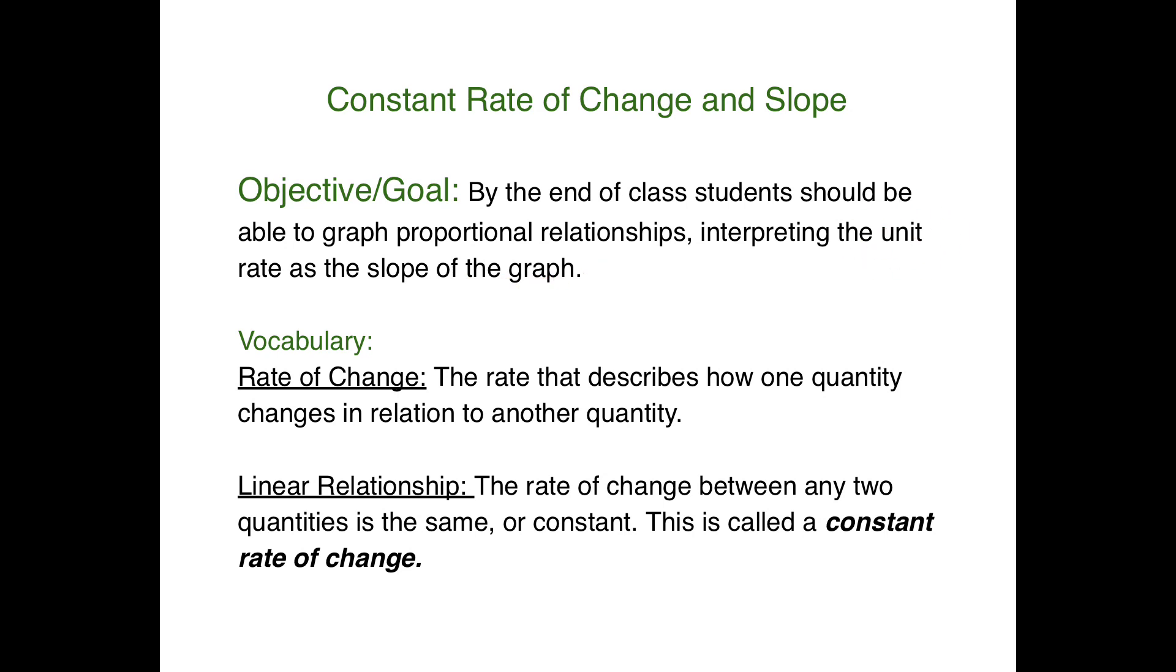Unit rate means that it's to one unit. Rate of change is when you have the rate that describes how one quantity changes in relation to another. In a linear relationship, the rate of change between two quantities is the same or constant. This is called constant rate of change.